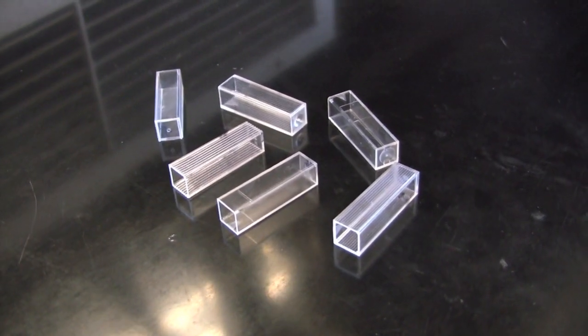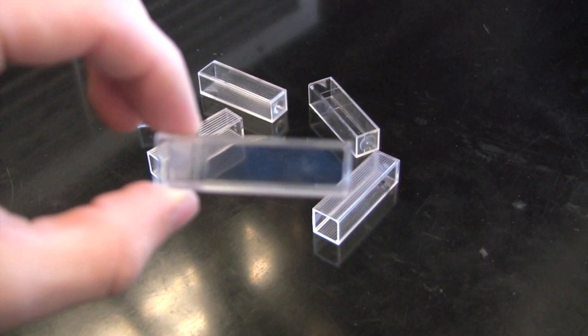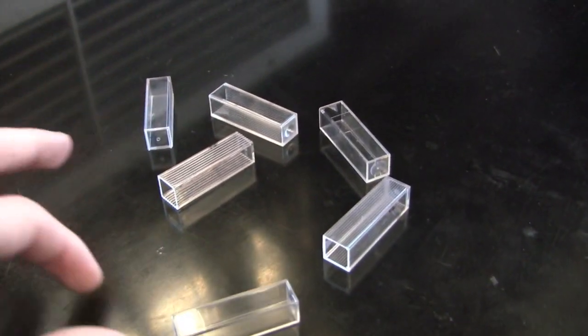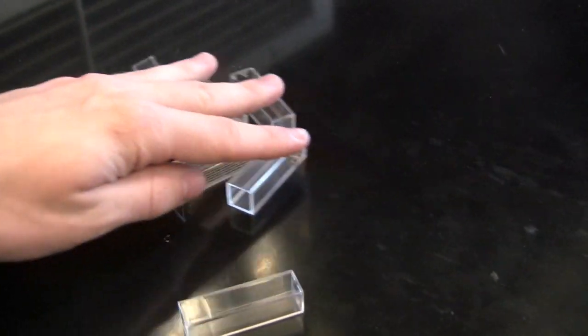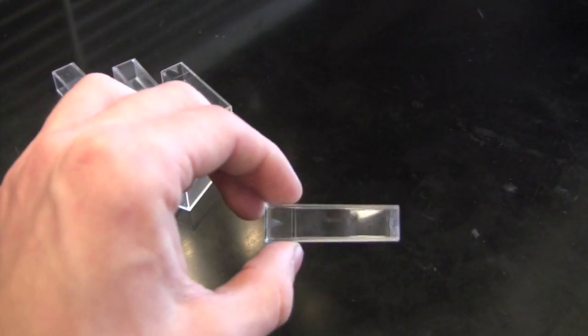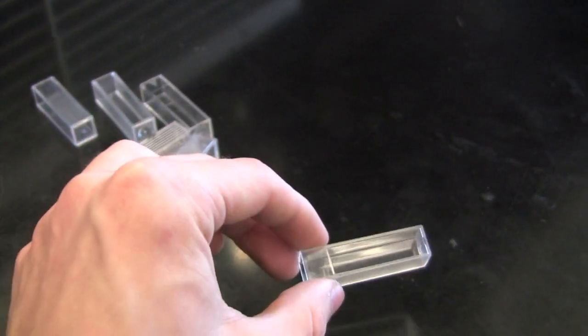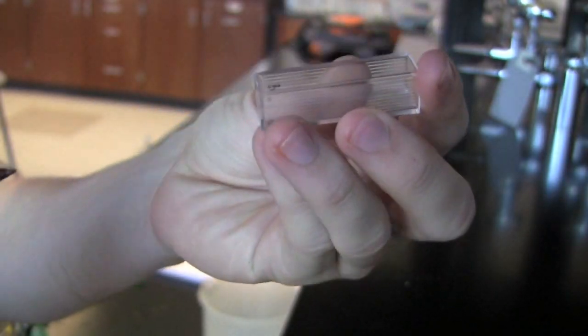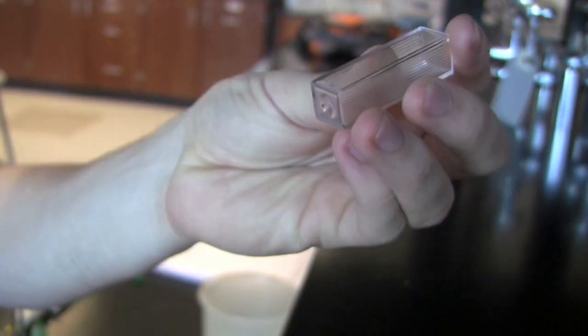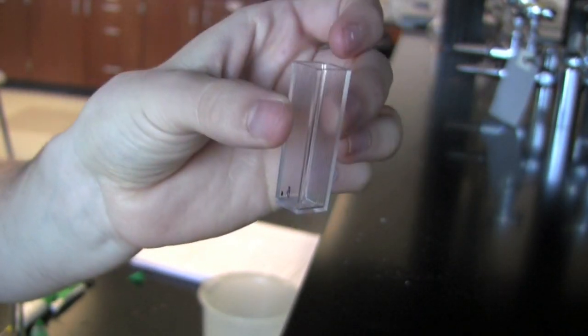Gather 6 cuvettes. Make sure two opposing sides are completely clear with no scratches and no scuffs. You'll need five of these cuvettes for the different concentrations that you made. Now this other cuvette will be used for an unknown concentration. Mark each cuvette with a number. This will allow you to know which cuvette has which solution and also remember to mark the cuvette with an unknown solution.